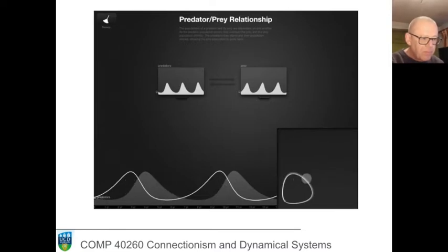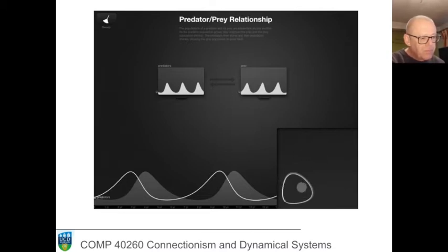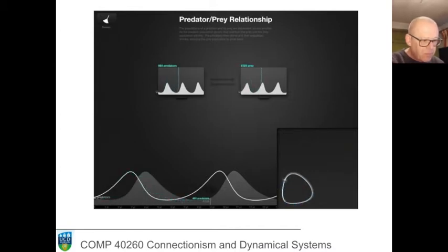On the right is a phase-based plot, which plots predators on the x-axis and prey on the y-axis, so we can see how they both change over time. Notice how the cursor on the phase-based plot follows where my finger is moving on the time plot.